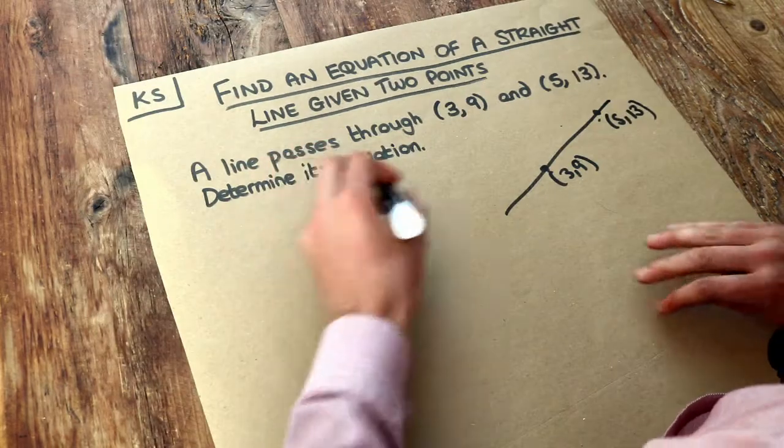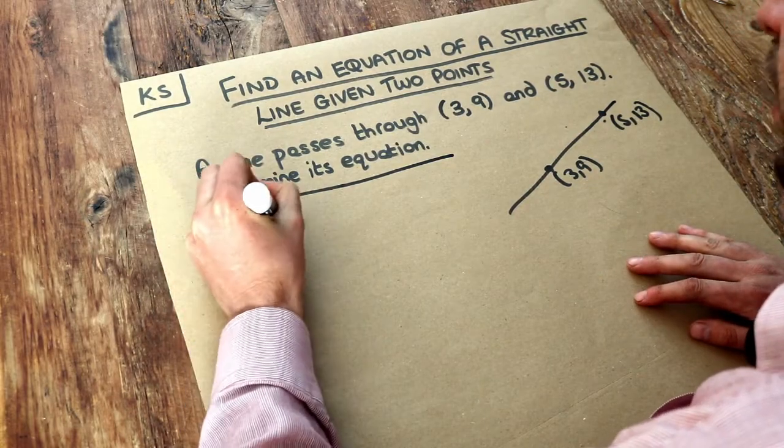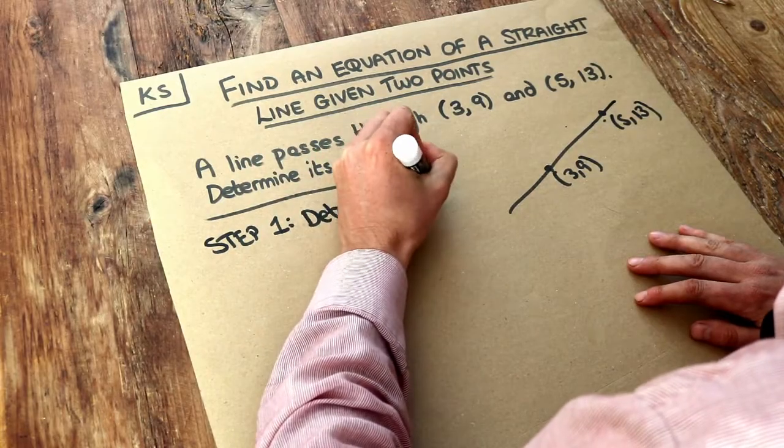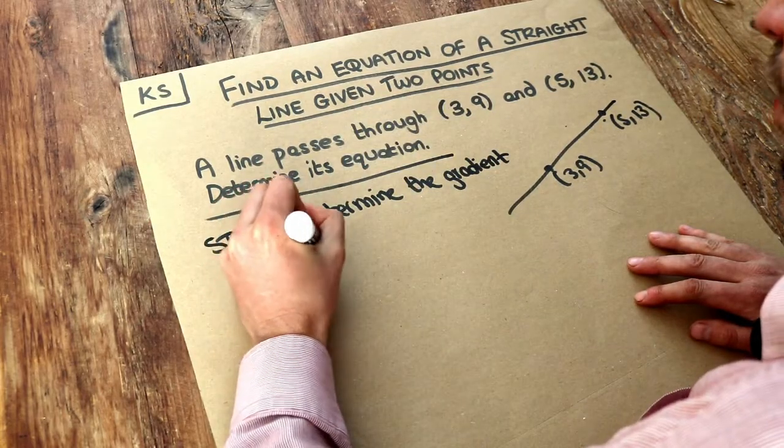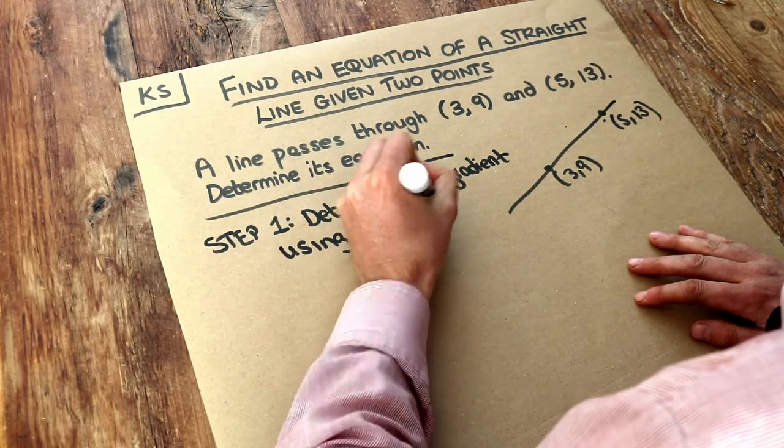Now I'm going to write out the steps first and then we're going to follow those steps. So step one is determine the gradient of your line using, and we explored this in another video, change in y over change in x.